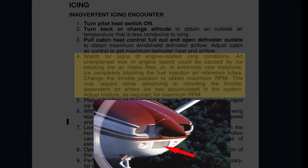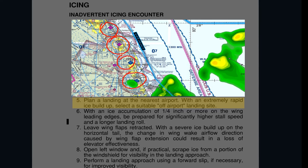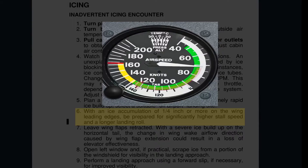In rare circumstances, ice could completely block the fuel injection air reference tubes. Change the throttle position for maximum RPMs to avoid propeller ice buildup that might lead to unwanted vibrations, and adjust your mixture as required. Step 5 consists of finding a suitable landing airport. If ice is building fast, an off-airport landing spot might be required. As we already know, icing changes the aerodynamic design of our wing, so be prepared for a potential increase in stall speed and longer landing roll.